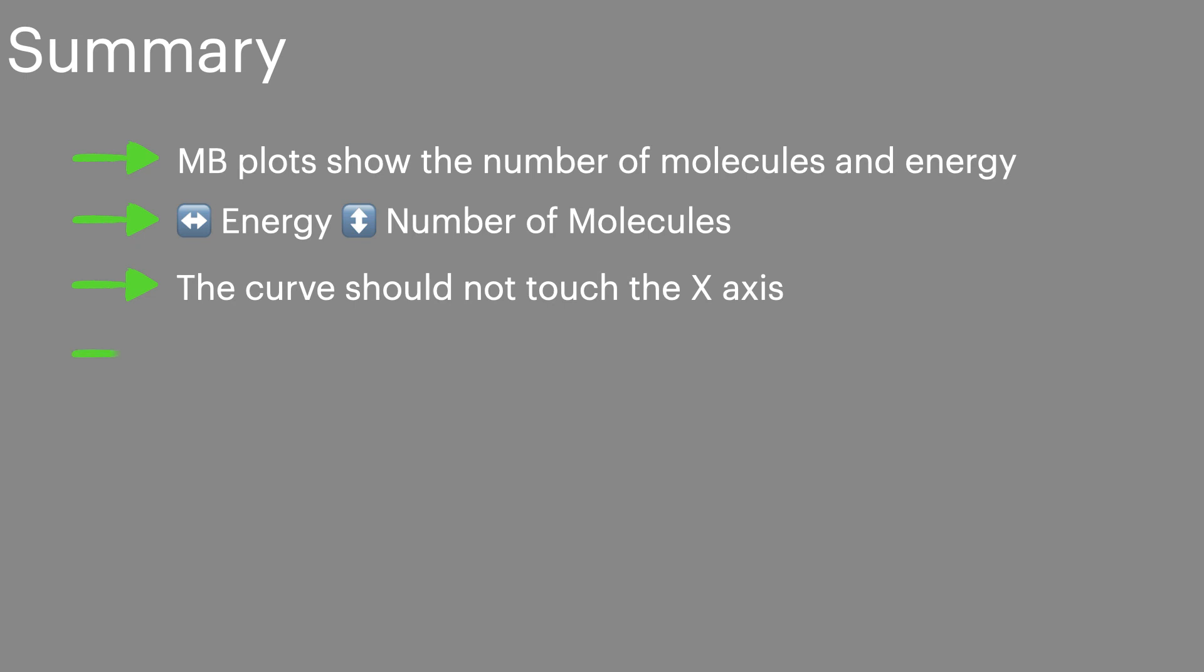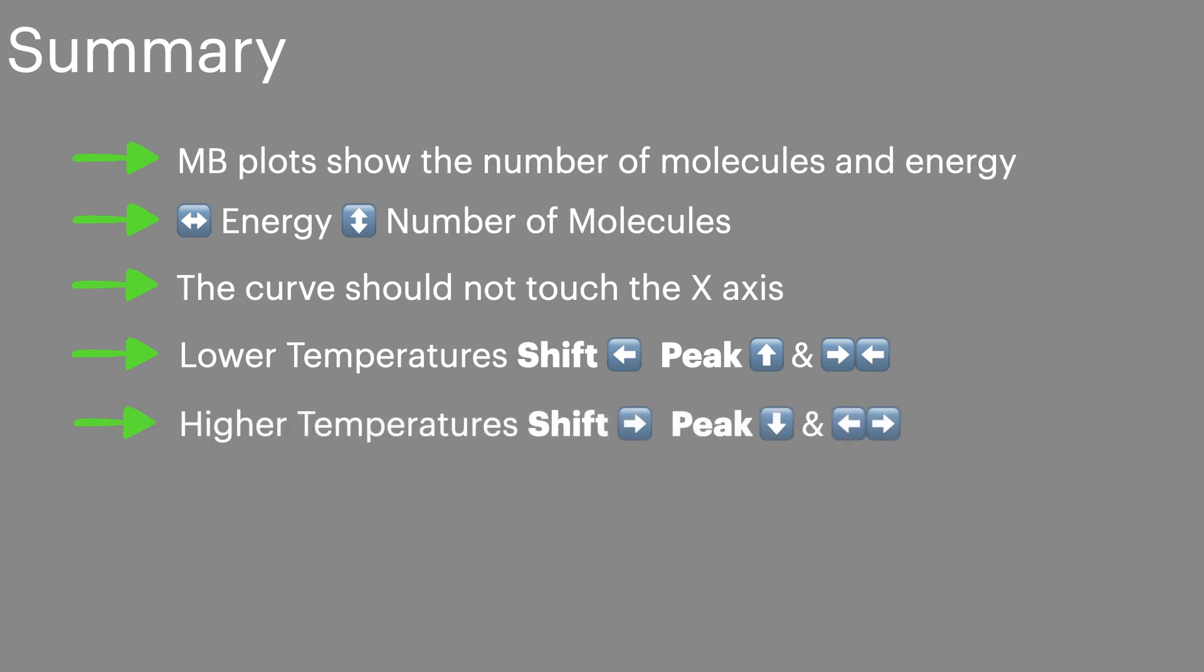Lower temperatures shift the peak to the left making it higher and narrower. Higher temperatures shift the peak to the right making it lower and broader. And adding a catalyst moves the activation energy to the left meaning more molecules now have the energy for the reaction.